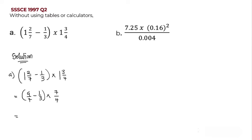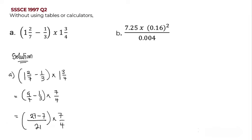We have two fractions subtracting each other, so we need to find the LCM of seven and three, which is twenty-one. Seven goes into twenty-one three times; three multiplied by nine gives twenty-seven. Three goes into twenty-one seven times; seven multiplied by one gives seven. So we have twenty-seven minus seven, all over twenty-one, multiplied by seven over four.